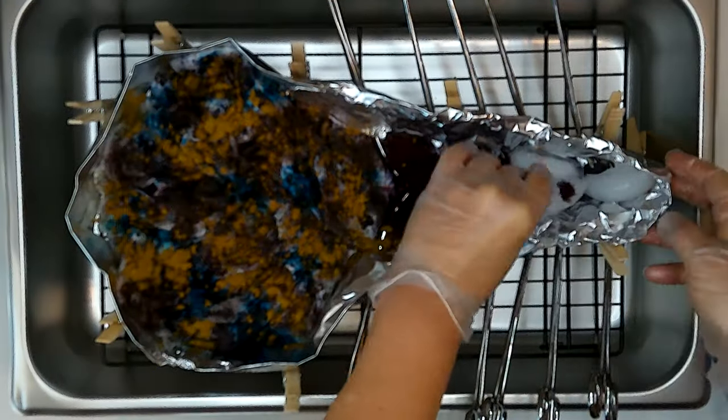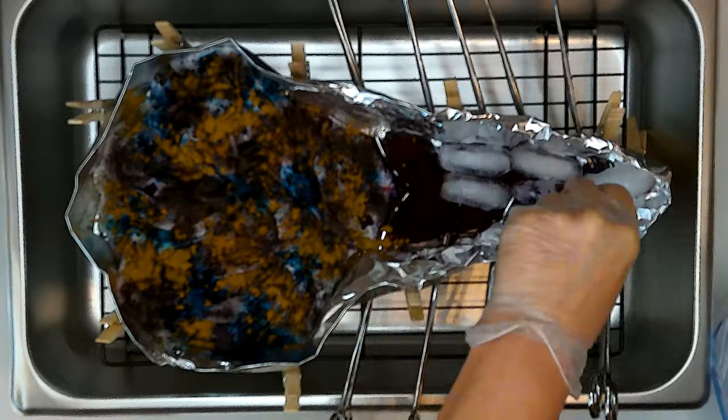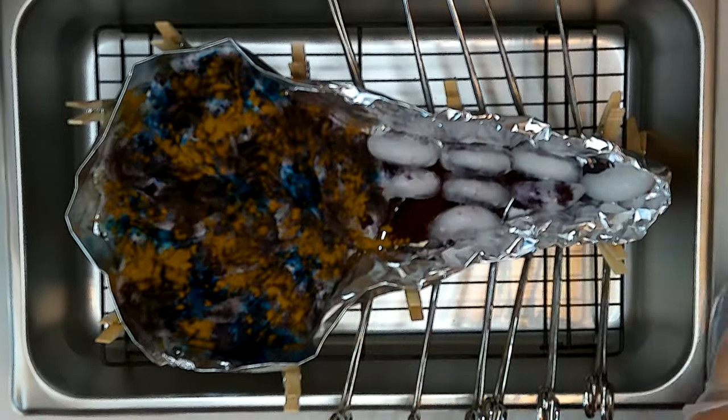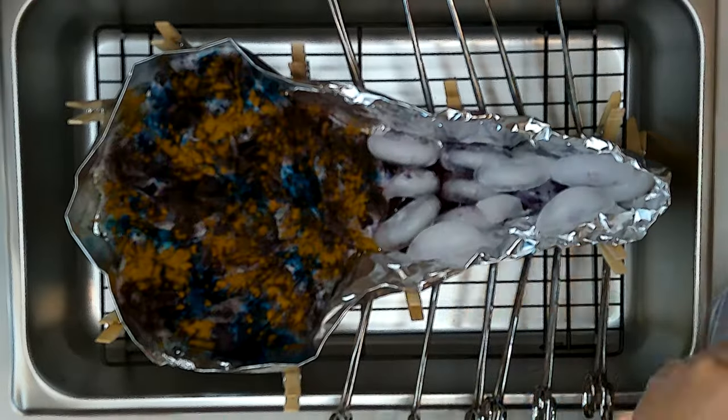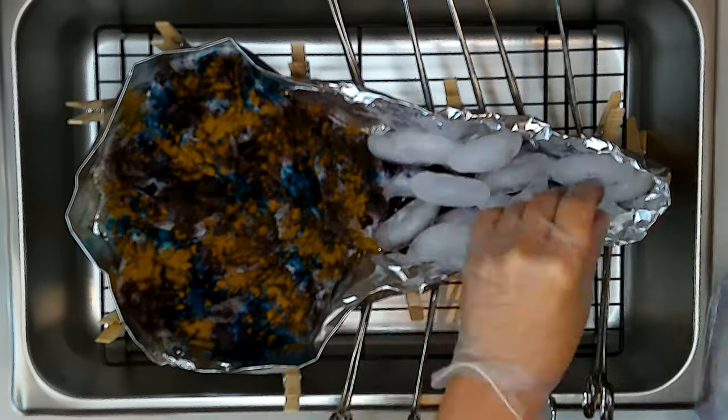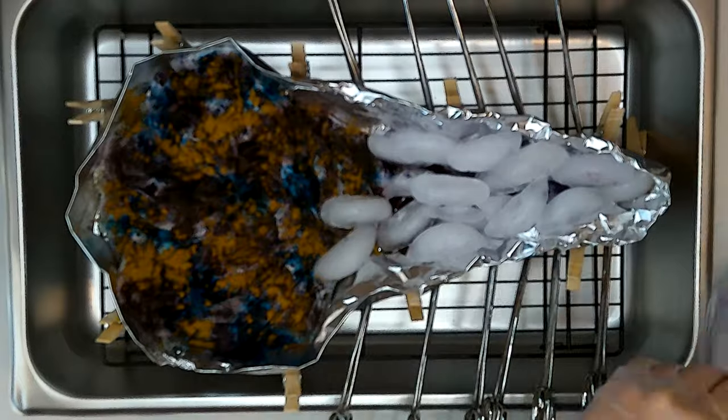Now that the dye is all applied, it's time for the ice. I'm carefully placing the ice cubes on the dye so that I disturb the dye as little as possible. Once all the ice cubes are in place, I'll let the shirt sit and batch.